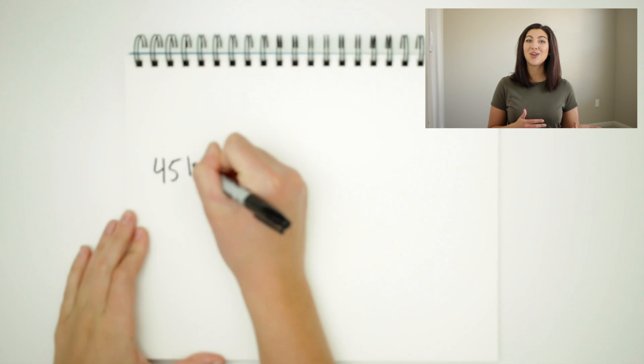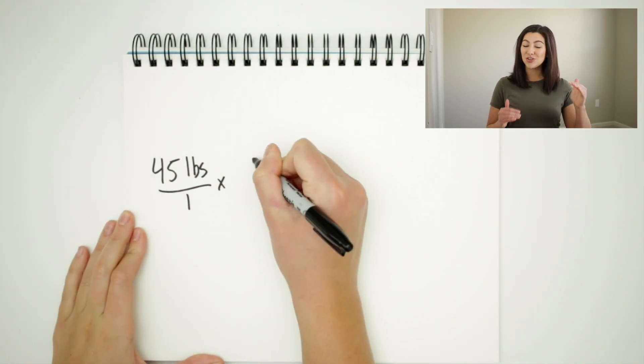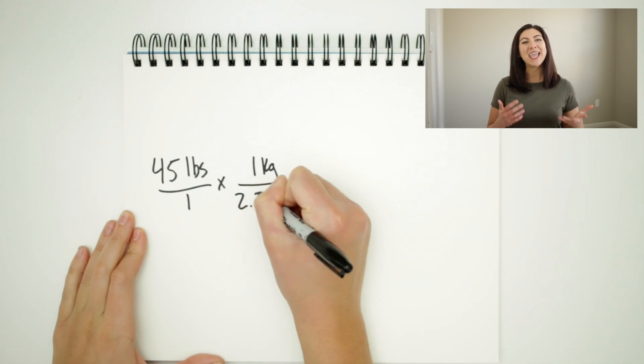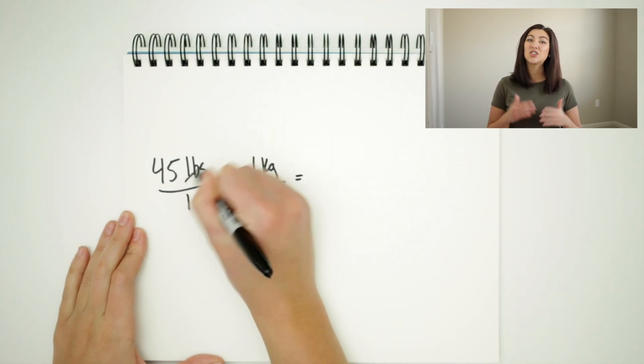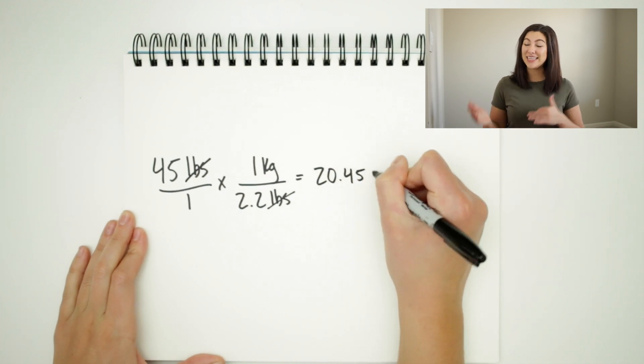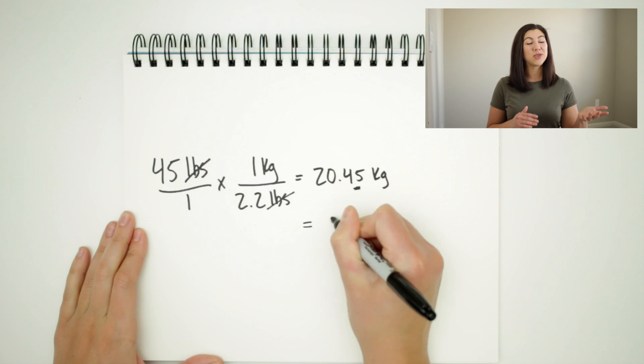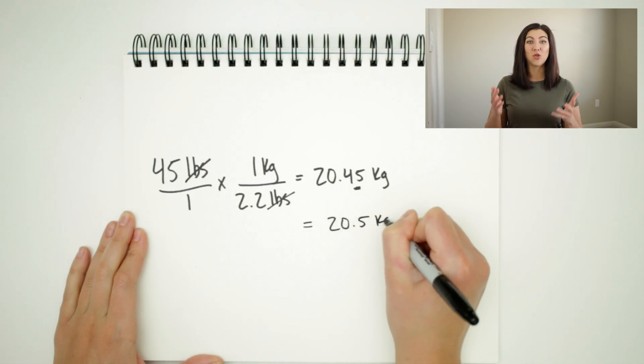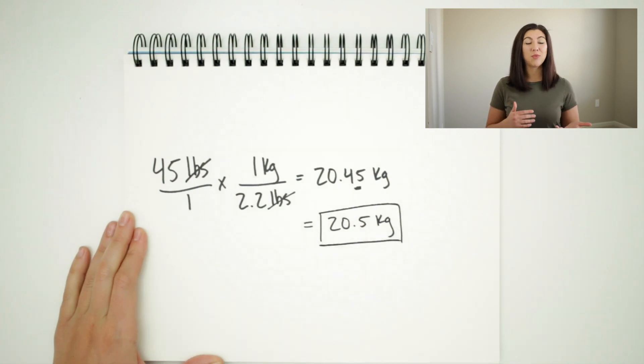Thinking back to the first rule, we need to make sure our units are able to cancel out. So before working out the dose, we need to convert our weight from pounds to kilograms. Our patient is 45 pounds, and we know that one kilogram equals 2.2 pounds. Setting up the conversion and canceling units, we get 20.45 kilograms. Per our rounding rule, weights are reported to the tenths, so our final weight for this problem is 20.5 kilograms.